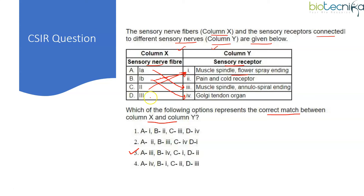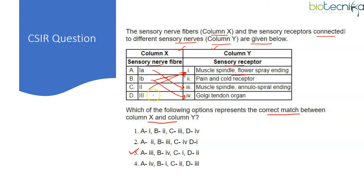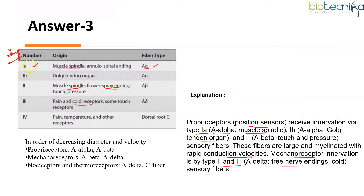Type 2 fibers match with muscle spindle or flower-spray endings. For type 3, it is associated with pain and cold receptors, sometimes touch receptors. Types 1a, 1b, and 2 are large myelinated fibers with rapid conduction velocities. So D matches with 2 for pain and cold receptors. The right answer is option 3. Even knowing one match helps you find the correct answer.